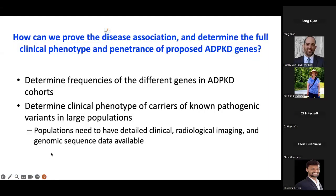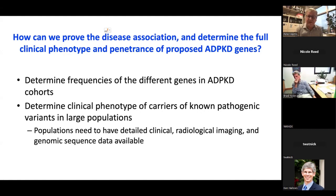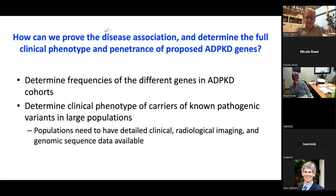To prove disease association and determine clinical phenotype and penetrance of proposed ADPKD genes, we can look at their frequency in defined ADPKD cohorts and at the clinical phenotypes of carriers of known pathogenic variants in large populations. In these populations we need good clinical, radiological, and genomic sequence data to get meaningful information.